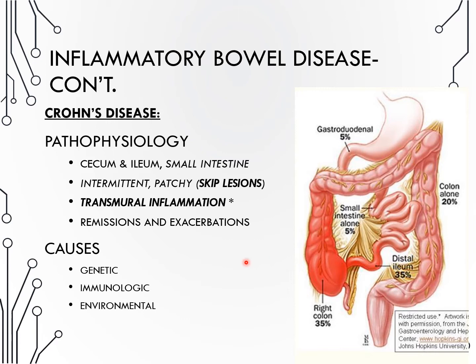Another problem with fistulas is that fistulas and intestinal edema lead to severe malabsorption, sometimes to the level of debilitation. Anemia and B12 deficiency are very common findings in Crohn's disease. Crohn's is genetic, and about 20% of patients have at least one relative who is positive for Crohn's — it does run strongly in families. People who use tobacco, are of Jewish ethnicity, or live in urban environments have also been noted to develop Crohn's disease.